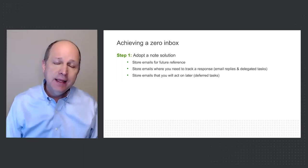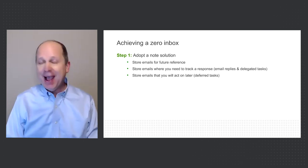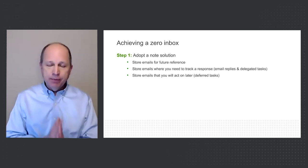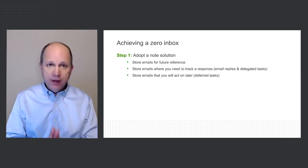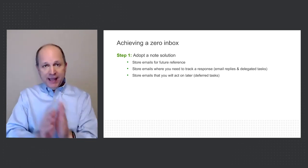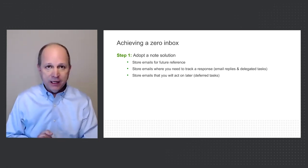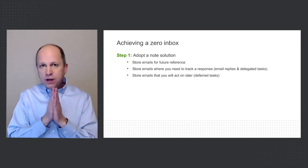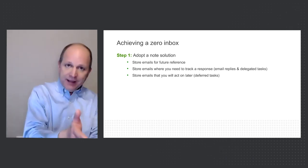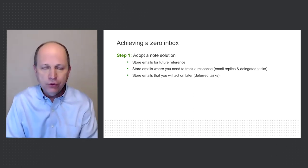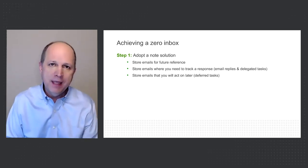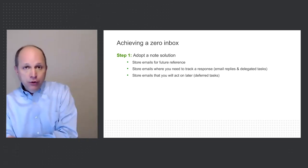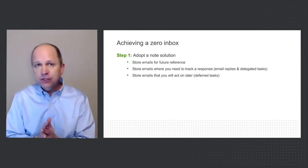Let's talk about how to achieve and maintain zero inbox. Step one is to adopt a note solution — Evernote or OneNote. If you don't have something similar, you will never be able to achieve, and definitely never maintain, zero inbox. As the emails come in, remember the white space? Just push it straight from your inbox to the note solution — it doesn't matter if you use Google or Microsoft, both talk to OneNote and Evernote through integrations. Just click the button, send the email through to the note solution, and make a reference of when you plan to get that done.